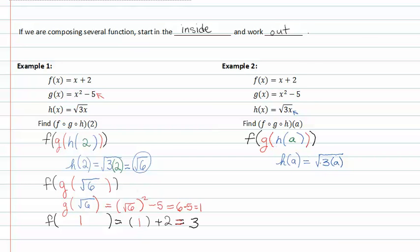From here, we take root three a and plug it into g of x. So g of x will now be g of root three a. And wherever there was an x in the function, we're going to put root three a. From here we get three a, because the square root of three a squared is three a minus five.